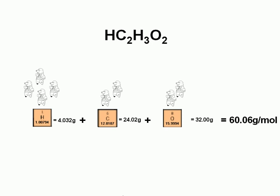For acetic acid, the mass of one mole is the mass of four hydrogen atoms, 4 times 1.008 grams, plus the mass of two moles of carbon, 2 times 12.01 grams, plus the mass of two moles of oxygen, 2 times 16 grams.